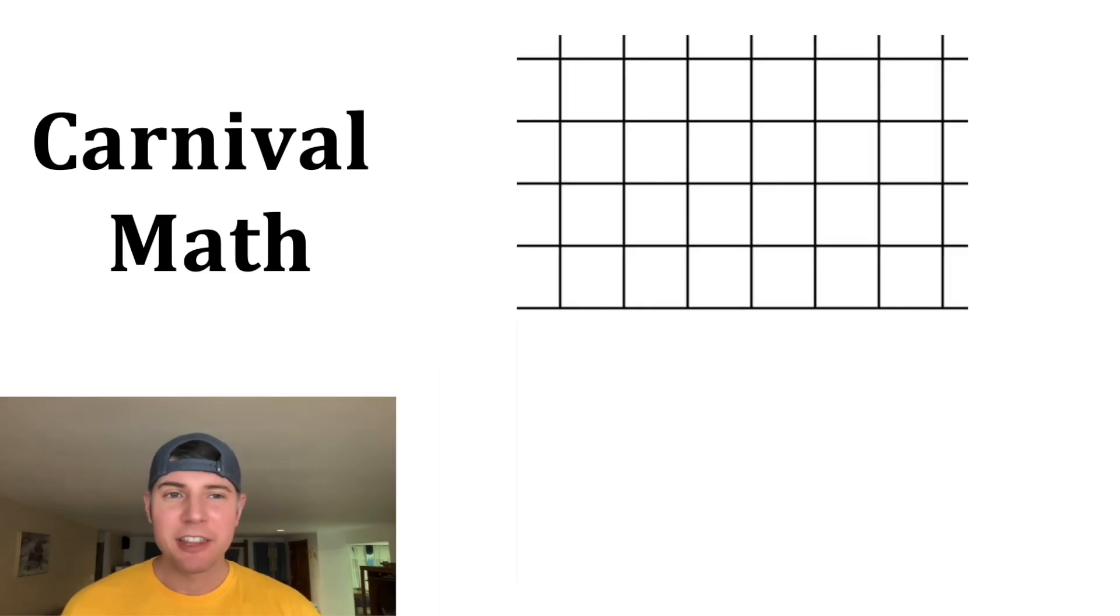Hey guys, let's say you're playing a carnival game. There's a mat with a grid on it, and the grid is made up of squares three inch by three inch, and you have a token that has a radius of one inch, and then you throw the token onto the grid.